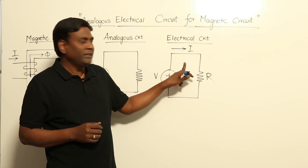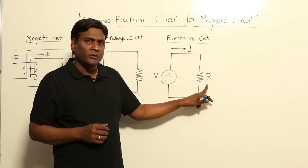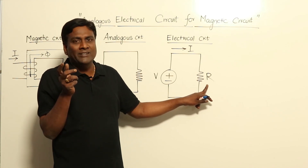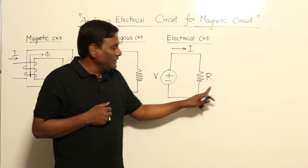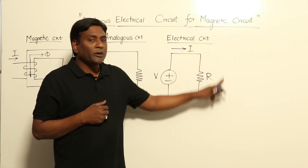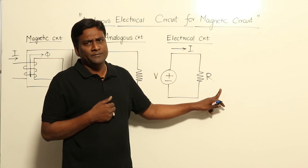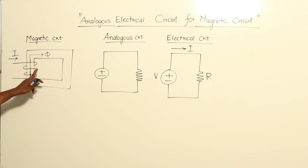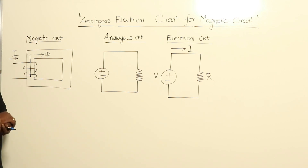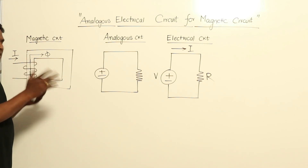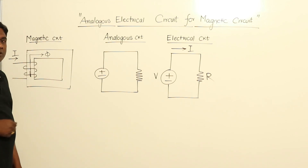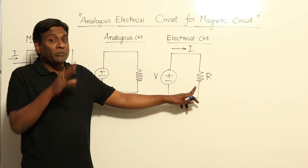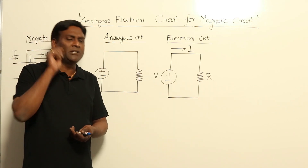We have to understand the difference between magnetic and electric. In an electrical circuit, resistance is a power-absorbing element — it absorbs electrical power and converts it into non-electrical power. But inductance is not a power-absorbing element; it is a power-storage element. Similarly, the magnetic system will not absorb power but will store energy. Keep that point in mind.